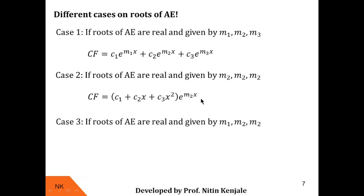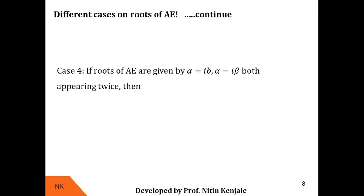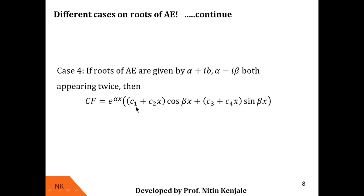Case 4: If roots of the auxiliary equation are complex conjugates α + iβ and α − iβ, each appearing twice, giving four total roots, then the complementary function is CF = e^(αx)·[(c1 + c2x)·cos(βx) + (c3 + c4x)·sin(βx)].